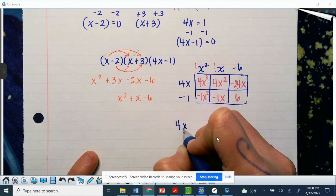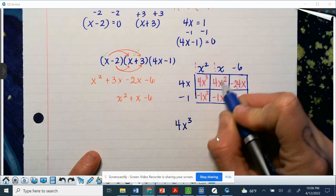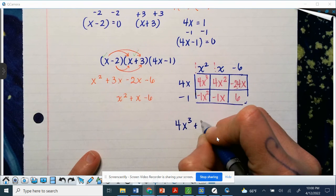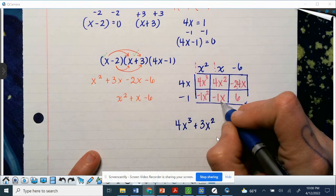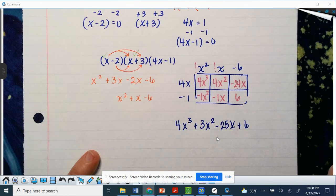So 4x cubed, standard form with our highest exponent first. If I have 4x squared and a negative 1x squared, that means I have 3x squared. Negative 1 and negative 24 is negative 25x. And then last but not least, plus 6.